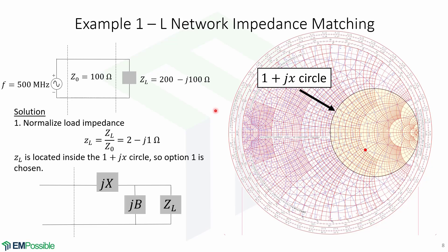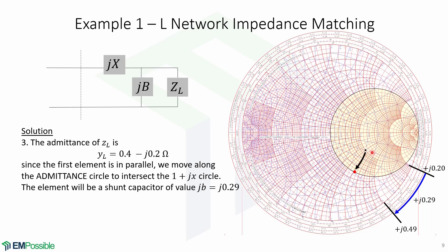The first step is to normalize the load impedance, which gives us a value of 2 − j1. In the Smith chart, this impedance is located here. Since the load impedance is located inside the 1 + jx circle, option 1 is chosen. The admittance of ZL is 0.4 − j0.2. The first element of the network is in parallel, so we're going to move along the admittance circle in the positive direction — which in this case is downwards — in order to intersect the 1 + jx circle.